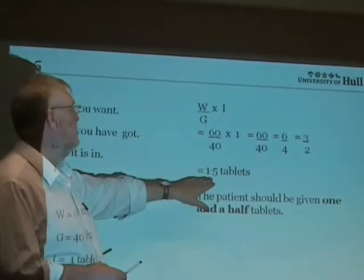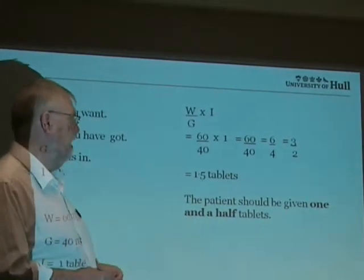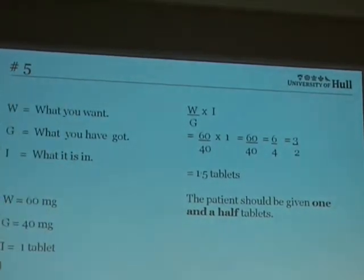And 3 over 2 is 1 and a half, i.e. we'll give the patient 1 and a half tablets. The patient should be given 1 and a half tablets.